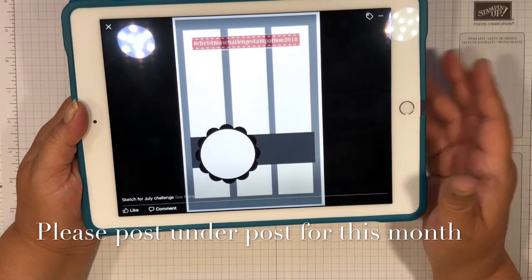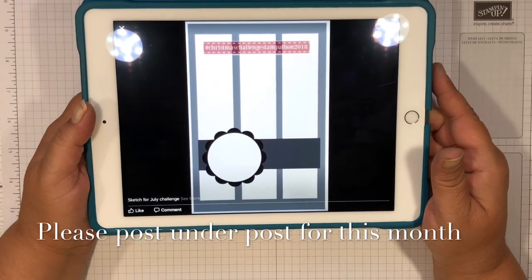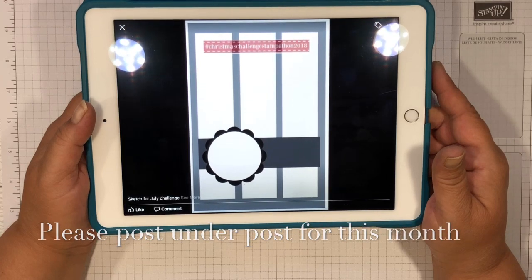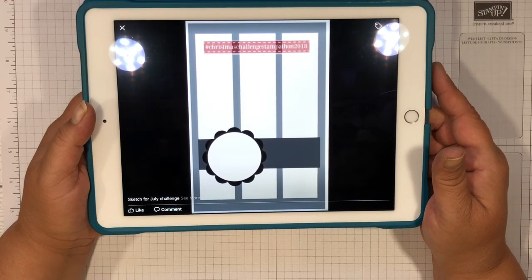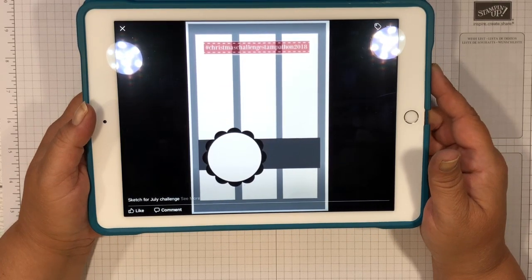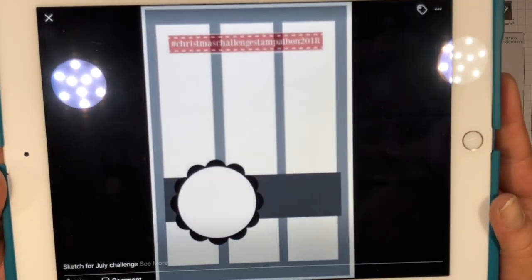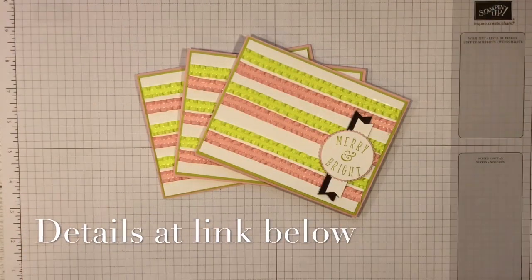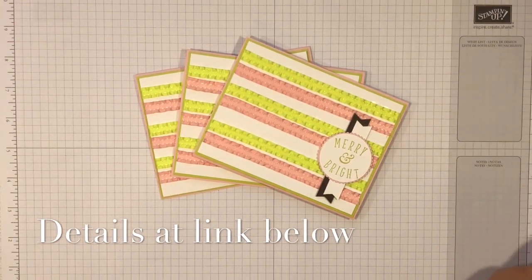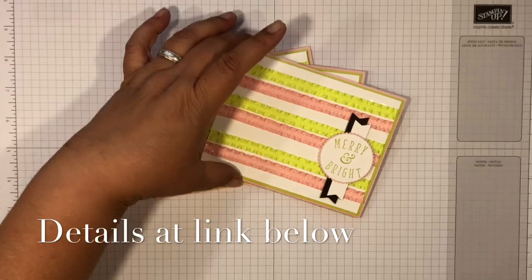The rules are you do need to have this in by midnight in your respective countries by the 24th of August, because then on the 25th of August we'll have a new challenge. Here's the sketch, let you all look at it one more time, and then here's my take on the sketch.